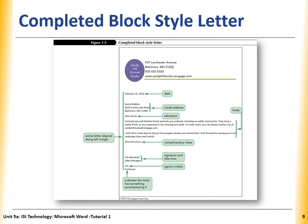I'm going to show you a completed block style letter — this is a sample. Here we have the Date; we always start with the date. Then the Address. Then the Salutation, like 'Dear Sonia,' and the Body — what we need to write. At the end, the Complimentary Close, 'Sincerely Yours.' Then the Signature and Title Line — who wrote the letter. Then the Typist Initial. The last element indicates the letter has something accompanying it — if we are sending another envelope with it, there should be an Enclosure. All these elements are aligned along the left margin. We'll talk about alignment in our next lesson.